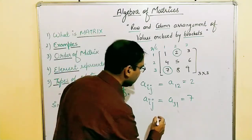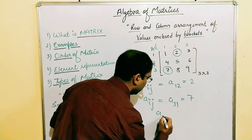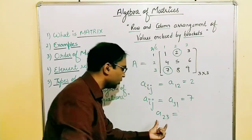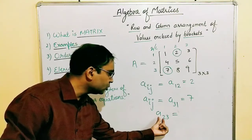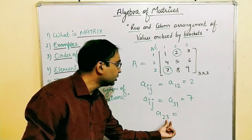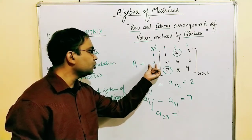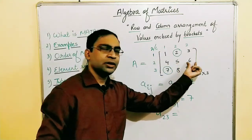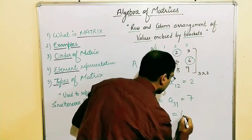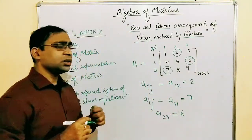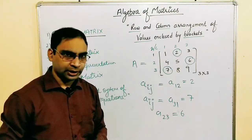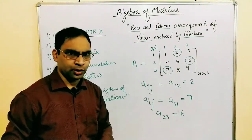Let's do it the other way. If I want to identify the element a₂₃, that means we go to row number two and column number three. So we can see that this element is 6. This is how we represent the elements of our matrix using index notation.